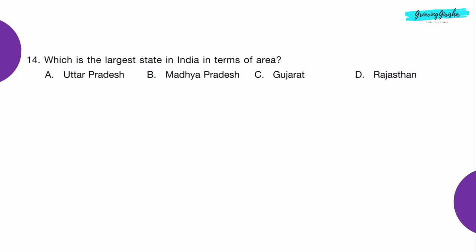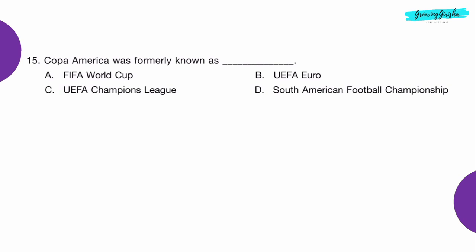Question 14: Which is the largest state in India in terms of area? Option D: Rajasthan.